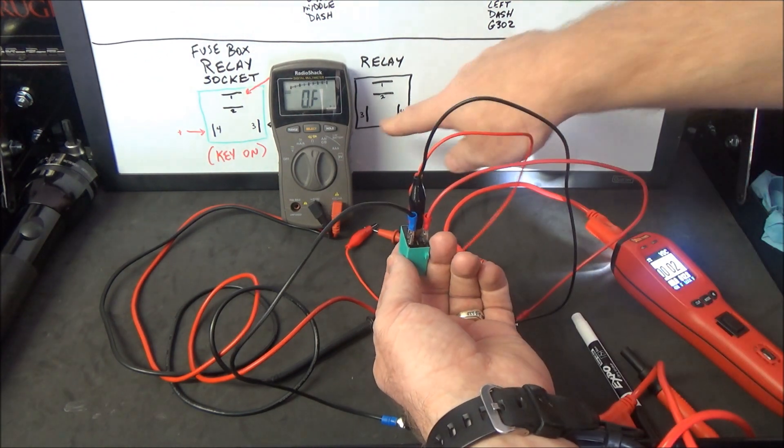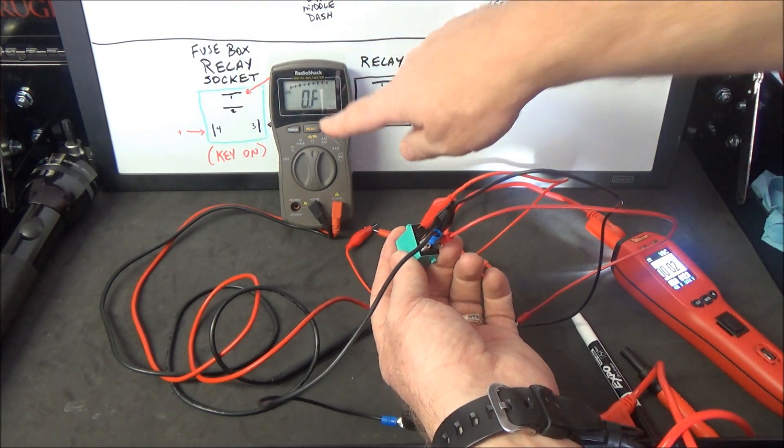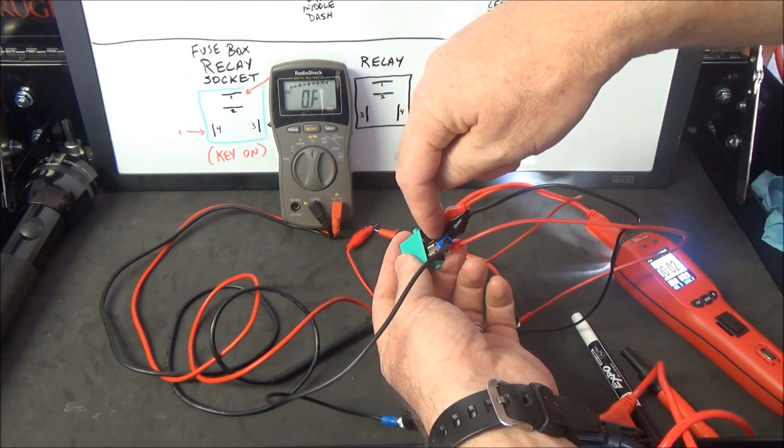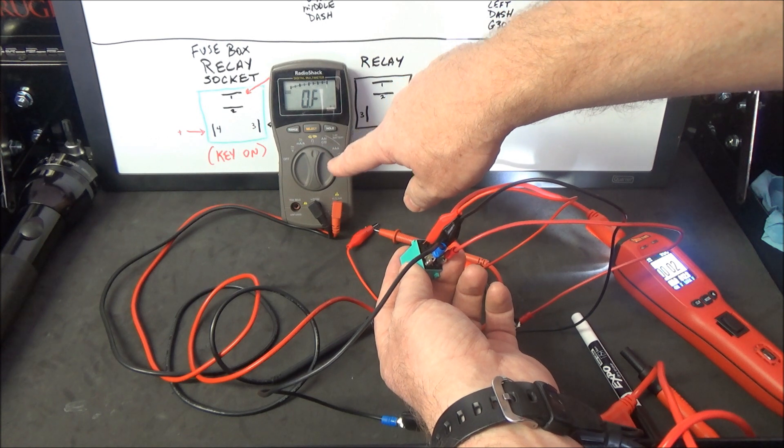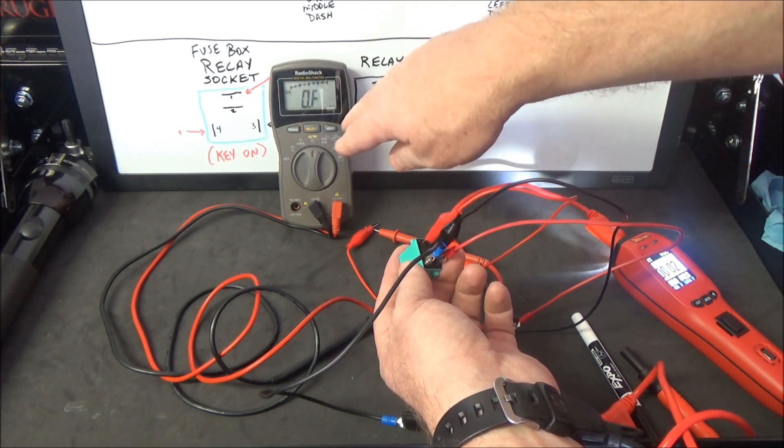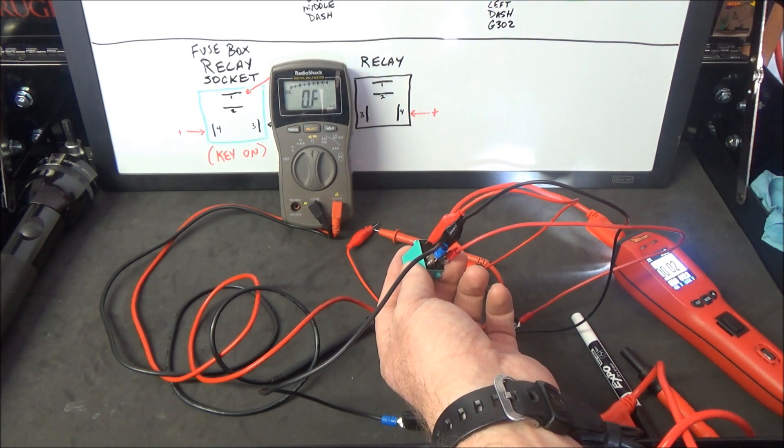I have my voltmeter hooked up to pins one and two. You want to set it on ohms. This one is auto-ranging, so I don't have to worry about the settings. But if you don't have an auto-ranging meter, make sure you set the settings up pretty high.